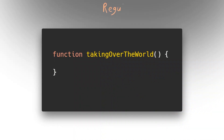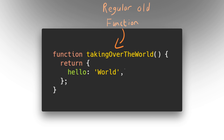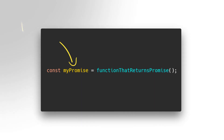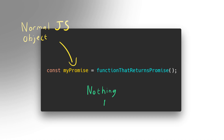You're probably familiar with functions in JavaScript, and functions can return values. These values can be anything like strings, numbers, objects, or arrays. A promise is just another type of thing that you can return from a function. When you call a function that returns a promise, you get back an object, just like you would get back an integer or a string from any other function that returns a value.